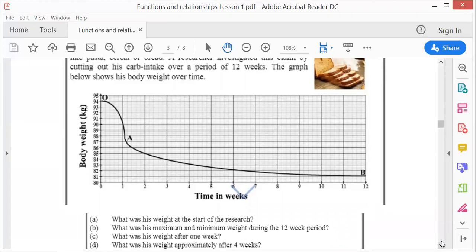What was his weight after one week? There is one week. So I go up and across, 90 kilograms. What was his weight approximately after four weeks? Now, why did it say approximately? Because you can't see exactly. So there's four weeks. Go across, about 83 kilograms.